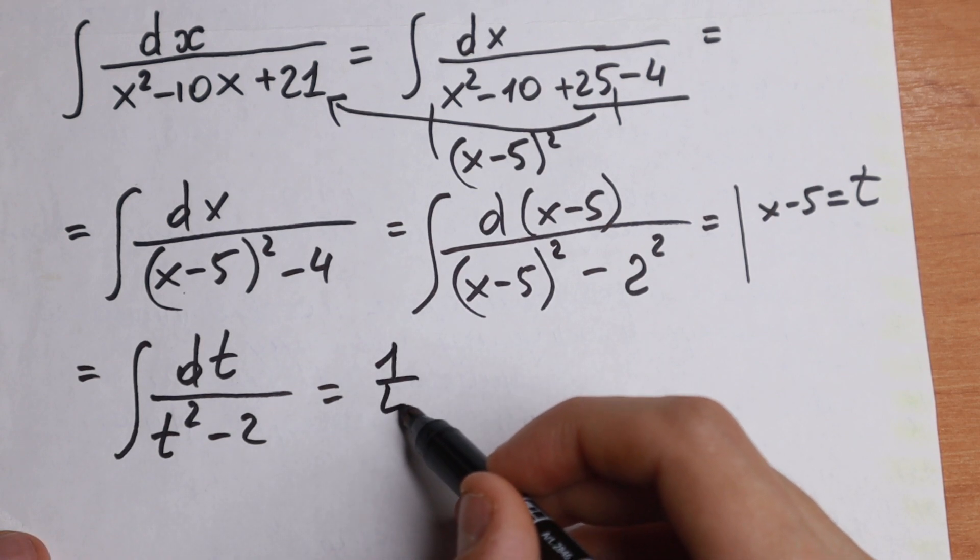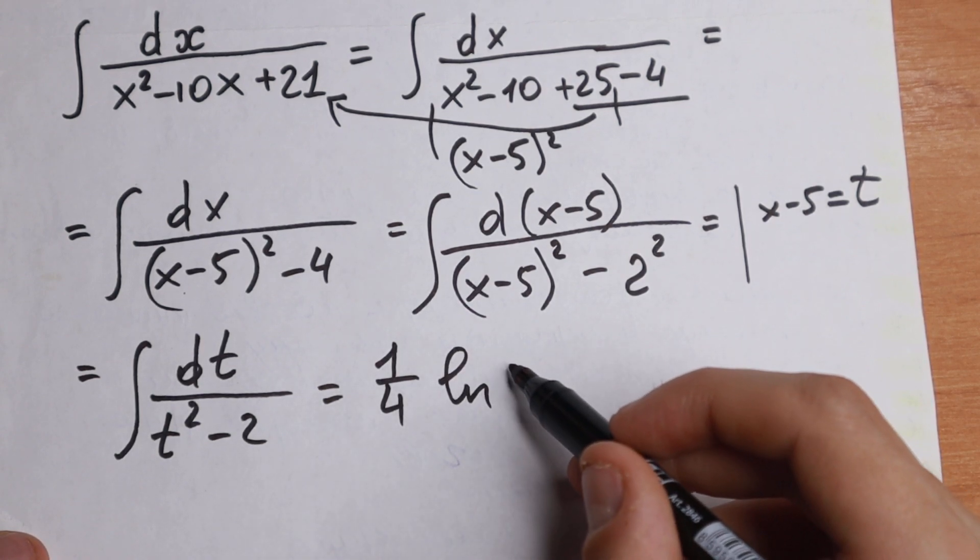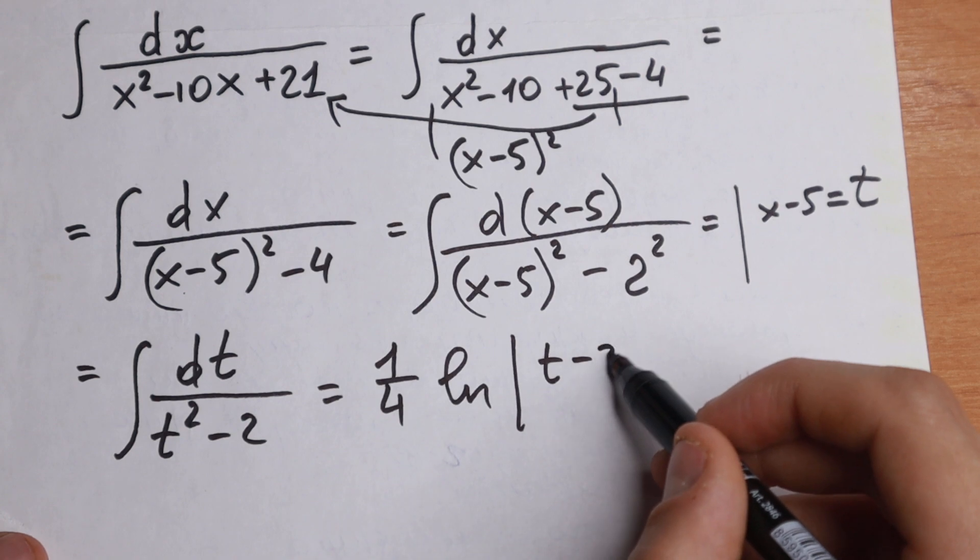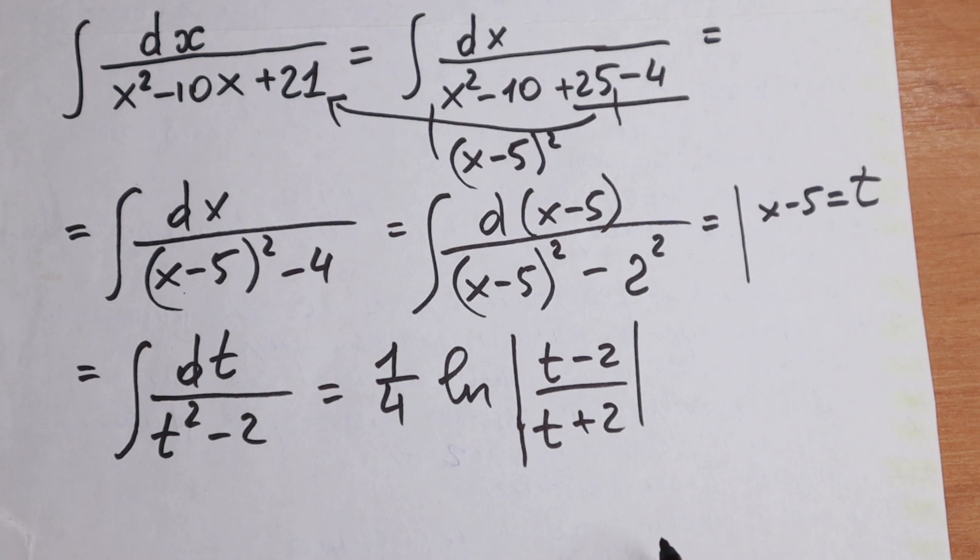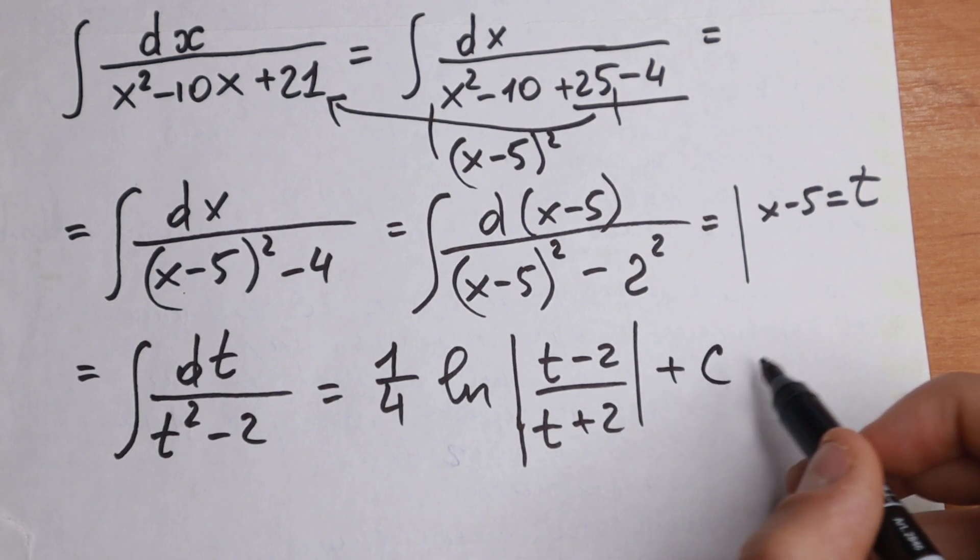We can write it as 1 fourth, natural log, t minus 2, dividing by t plus 2. This is our table case, and plus a constant.